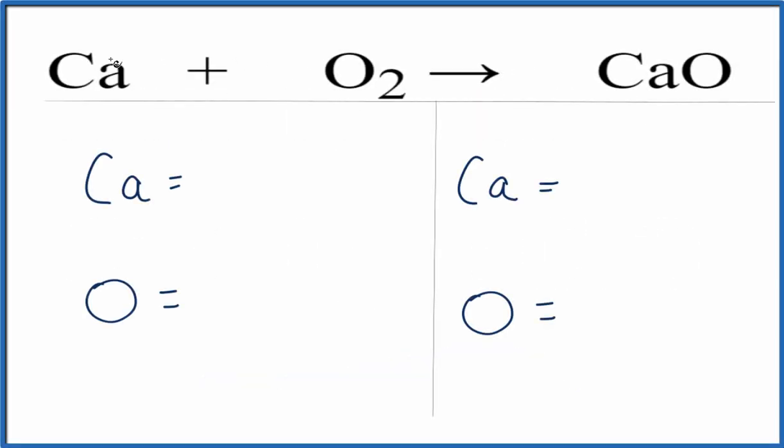So on the reactant side we have just one calcium and then we have two oxygens. Over on the product side we have one calcium and one oxygen. So this equation is not balanced. The oxygens, we need to do something to fix that.